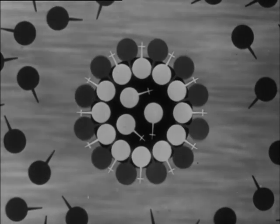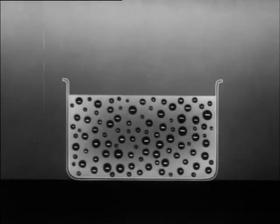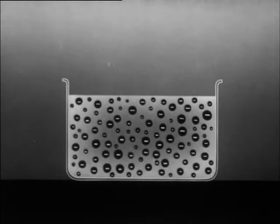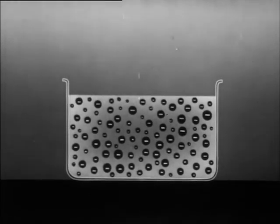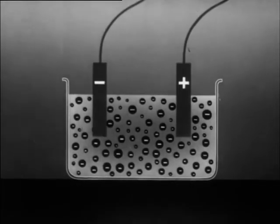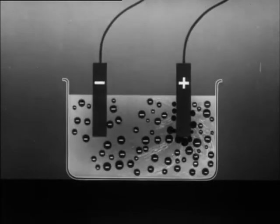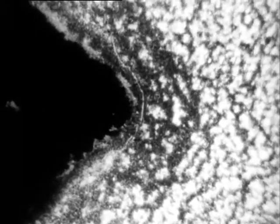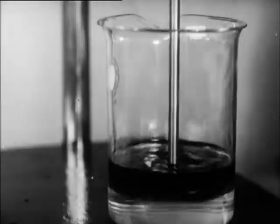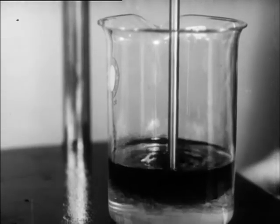Another thing which keeps the globules from coalescing is the fact that they are electrically charged and thus tend to repel one another. The charge arises from absorption of ions and from the fact that the emulsifying agent itself may be ionized. That the globules are indeed charged can be shown by passing a current through an emulsion, when the globules move towards the electrodes and the emulsion breaks down. This is demonstrated microscopically when the triangular pole on the left is positively charged by connecting to a battery.